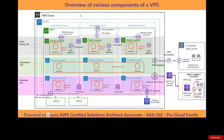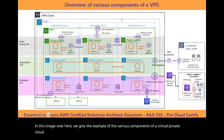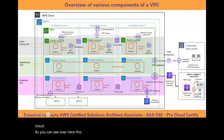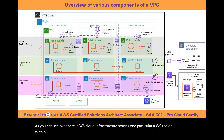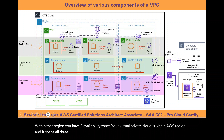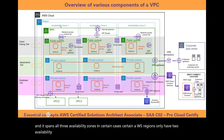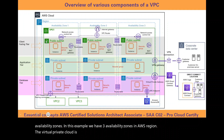In this image we give the example of the various components of a virtual private cloud. This AWS cloud infrastructure houses one particular AWS region. Within that region you have three availability zones. Your virtual private cloud is within the AWS region and it spans all three availability zones. In certain cases, certain AWS regions only have two availability zones. The virtual private cloud is a logically isolated network where you can place your AWS resources.